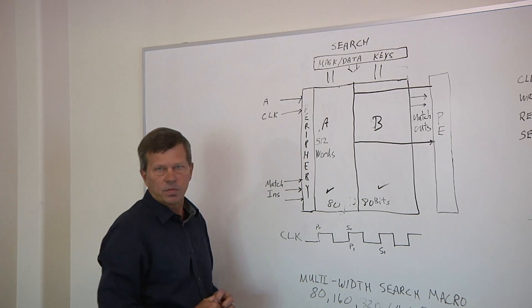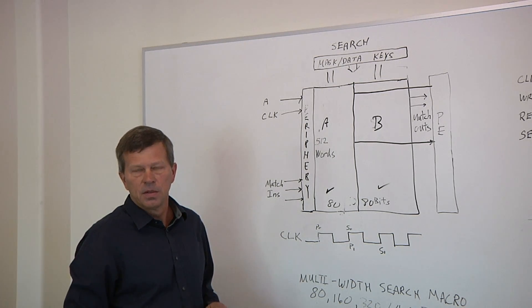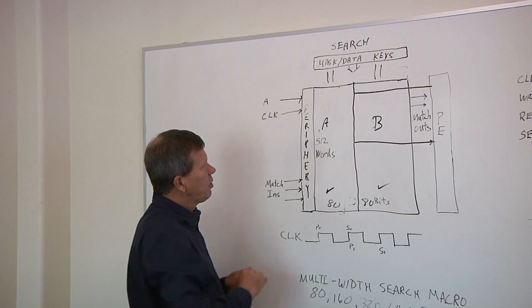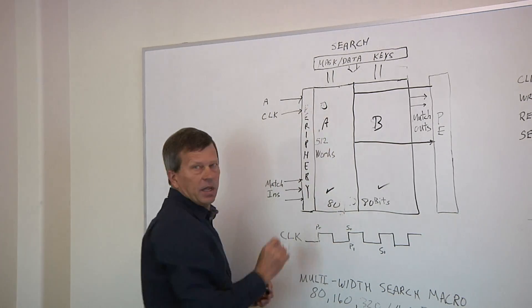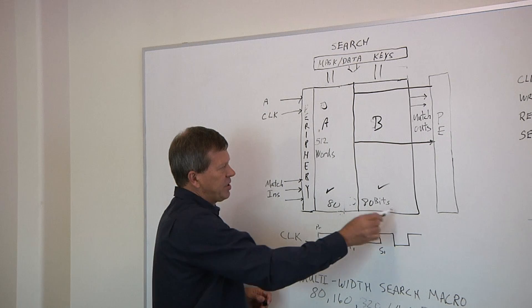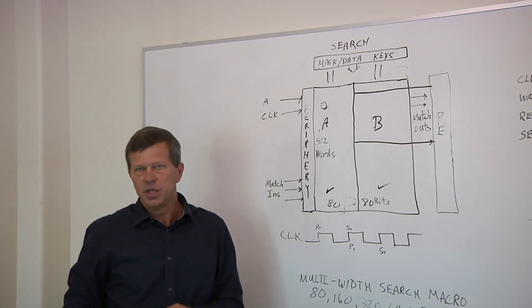So when you're working with TCAM, what do you typically start out with? What's standard there? The standard would be the bit cell from the foundry is where the building block is, and that defines pretty much the overall dimension and pitches of your TCAM.